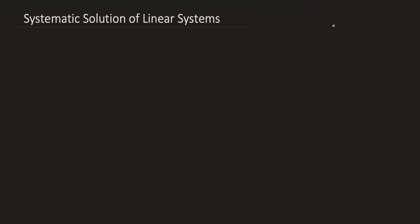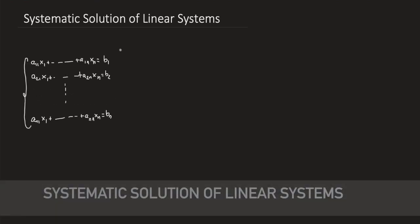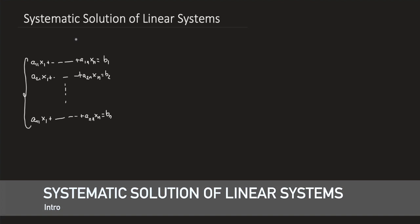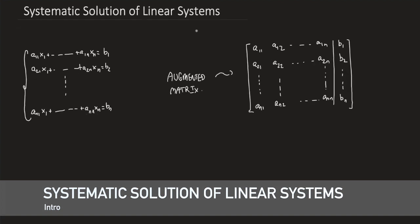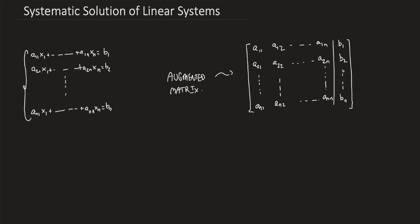Suppose we have a system of n linear equations and n unknowns, of the following form, where the a's and b's are known and we're solving for x. In previous lectures we talked about the augmented matrix — a matrix associated to the linear system — where we stack the coefficients of A on the left-hand side and augment the A matrix with the column vector b in its last column.